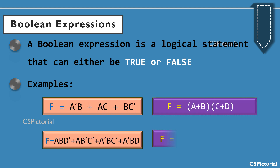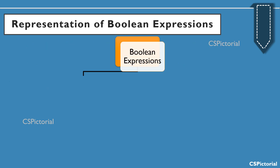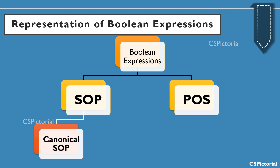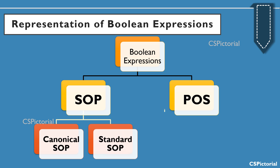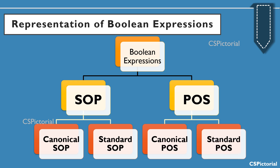We will now understand the difference between the various representations of Boolean expressions. Basically, every Boolean expression can be represented in two forms: either SOP form or POS form. The Boolean expression given as SOP can either be in its canonical form or standard form. Similarly, the Boolean expression given as POS can either be in its canonical form or standard POS form. In this video we will try to understand how to identify each of these representations and also simple conversion between these representations.